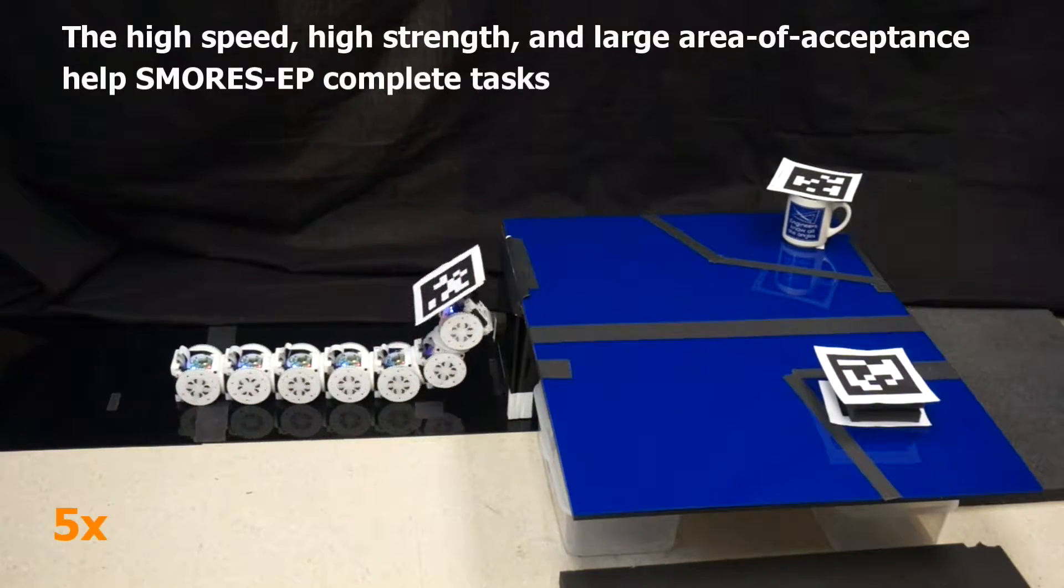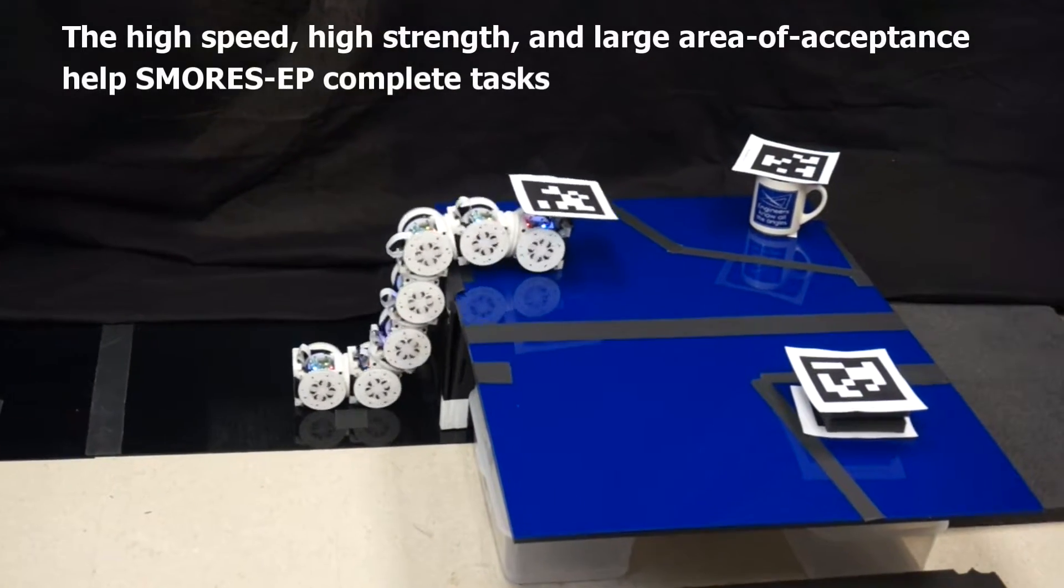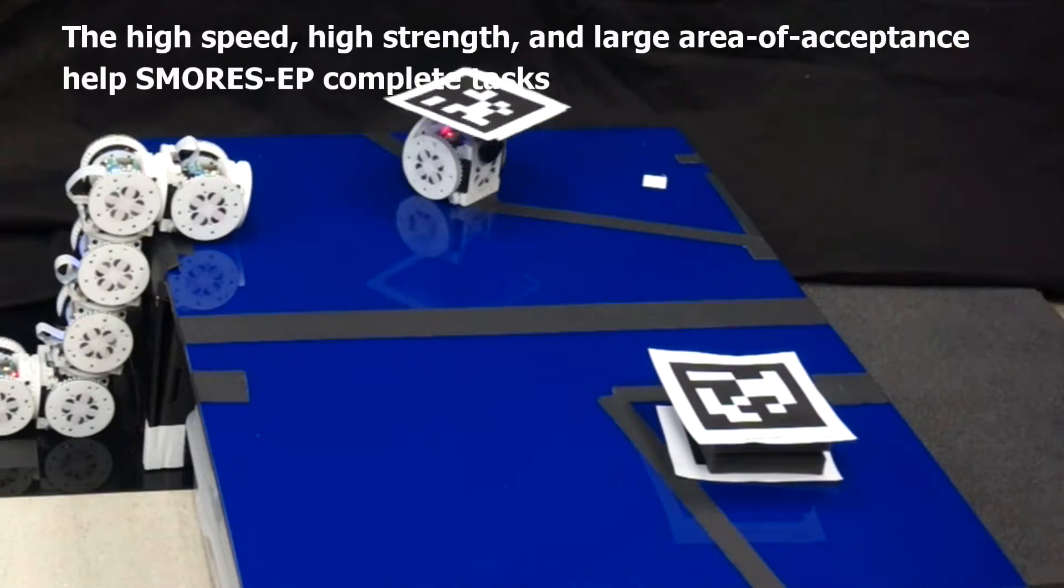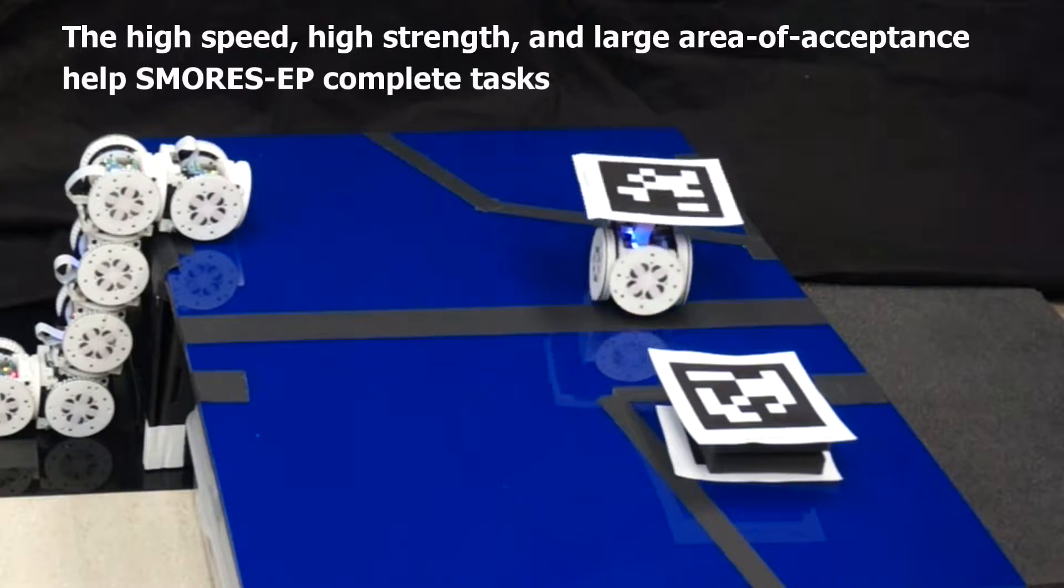The high speed, high strength, and large area of acceptance of the EP Face help S'mores EP complete tasks. Here, we see a snake configuration climb a ledge, pop off its head to explore, and then reattach to descend.